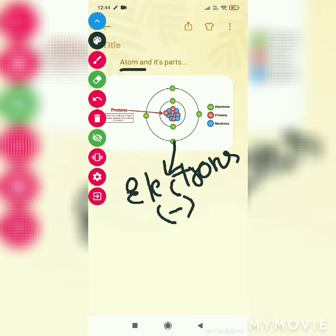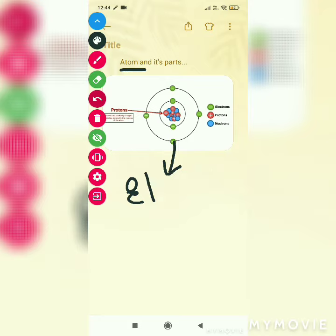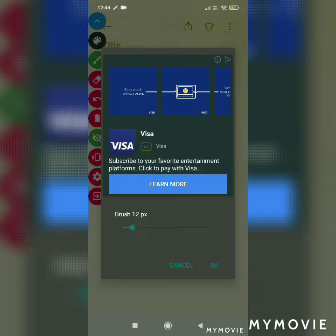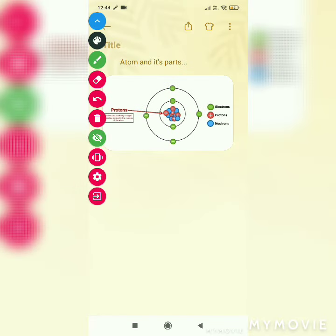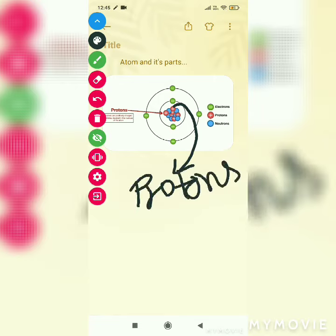Electrons are negatively charged particles that orbit around the atom. Now comes protons. Protons are positively charged particles inside the atom.